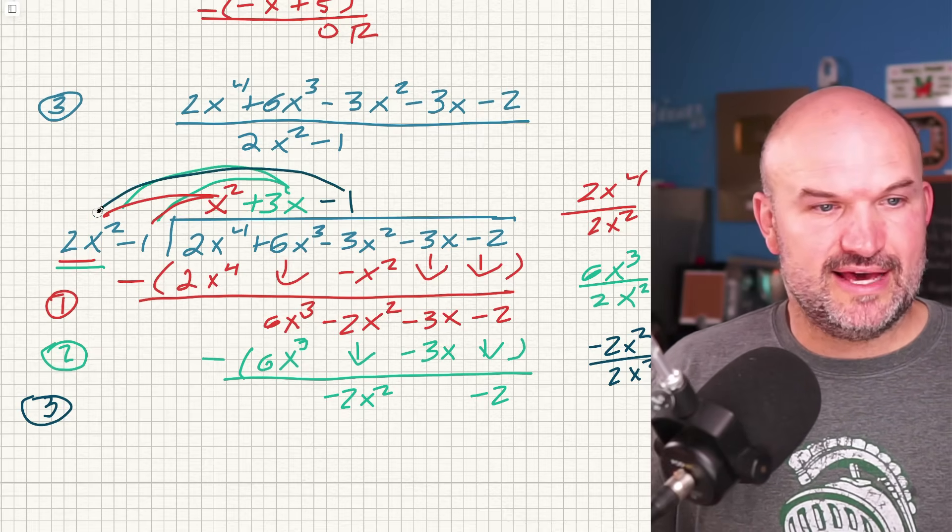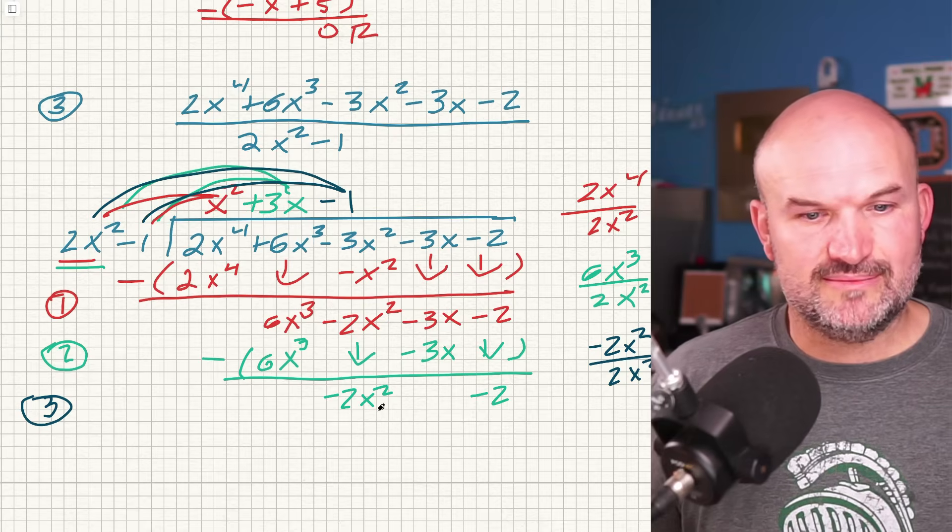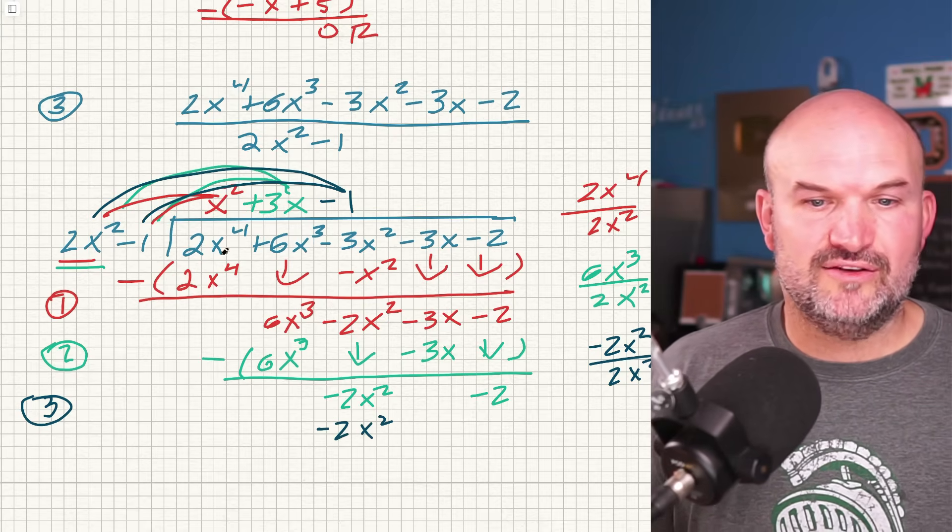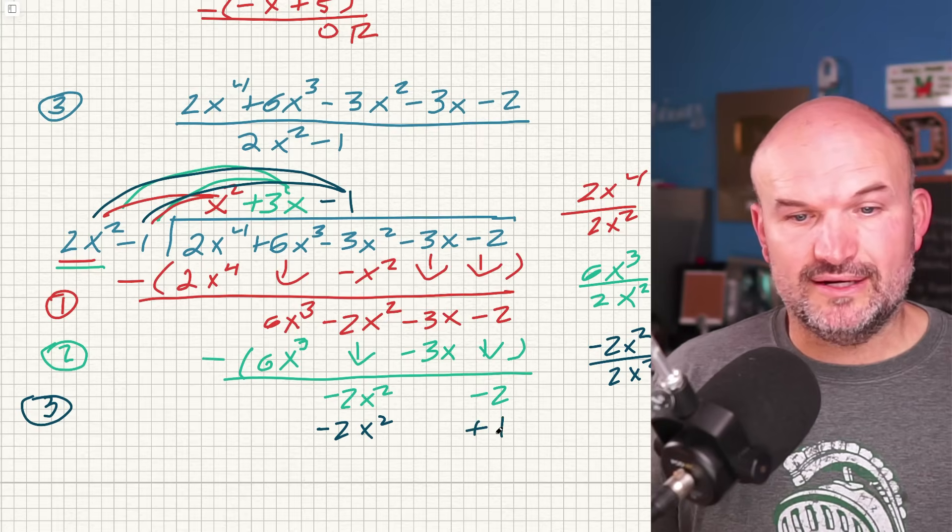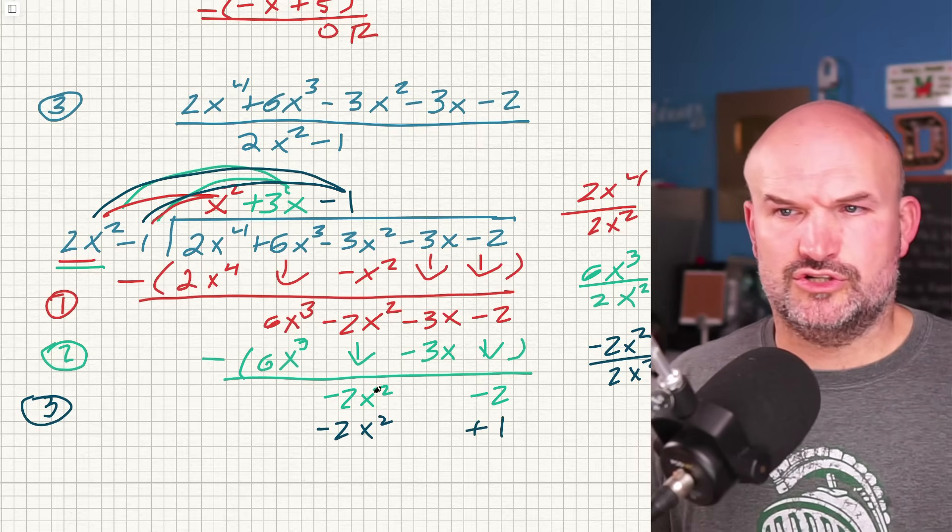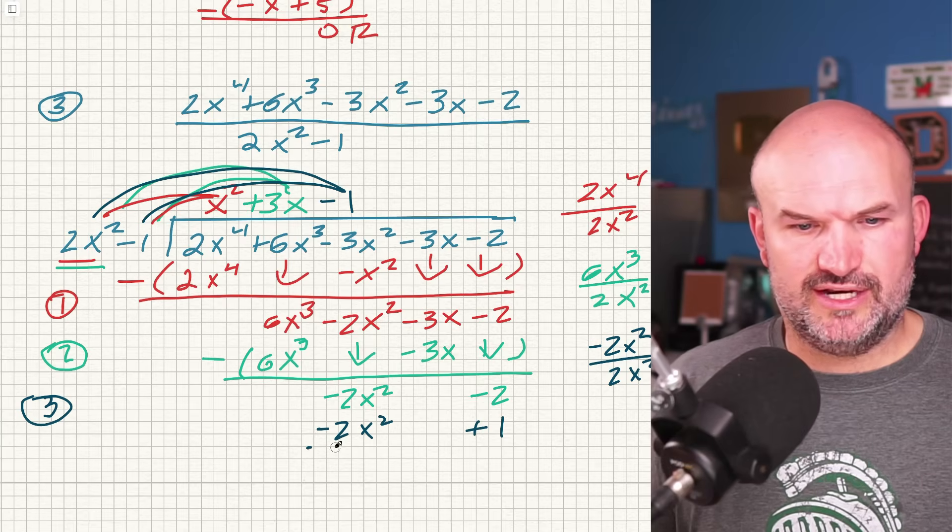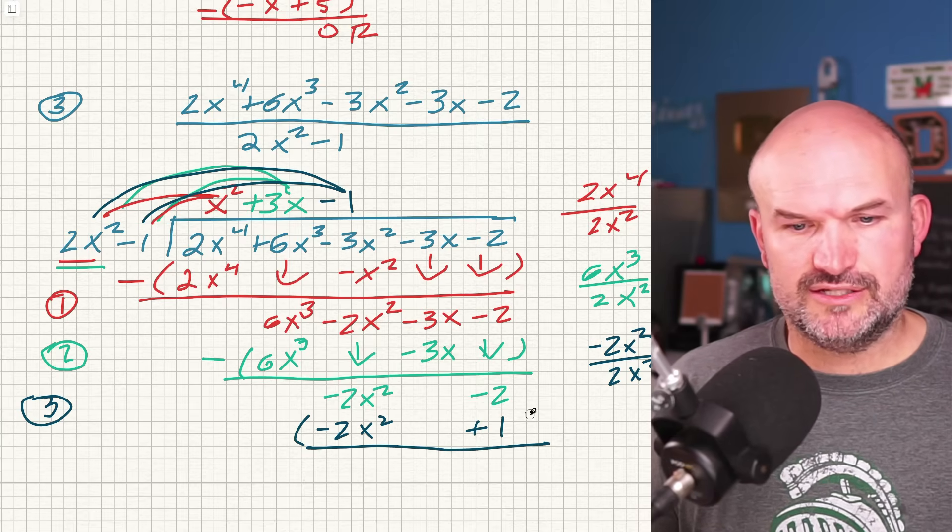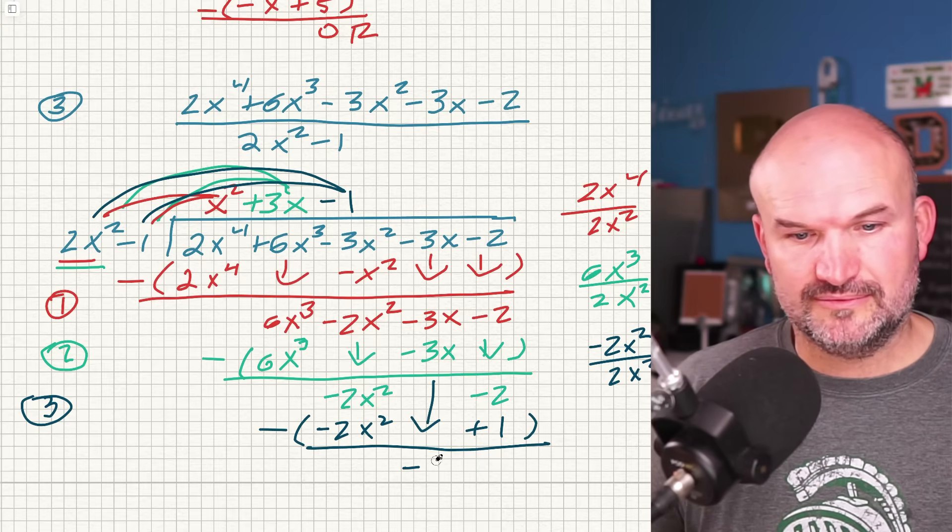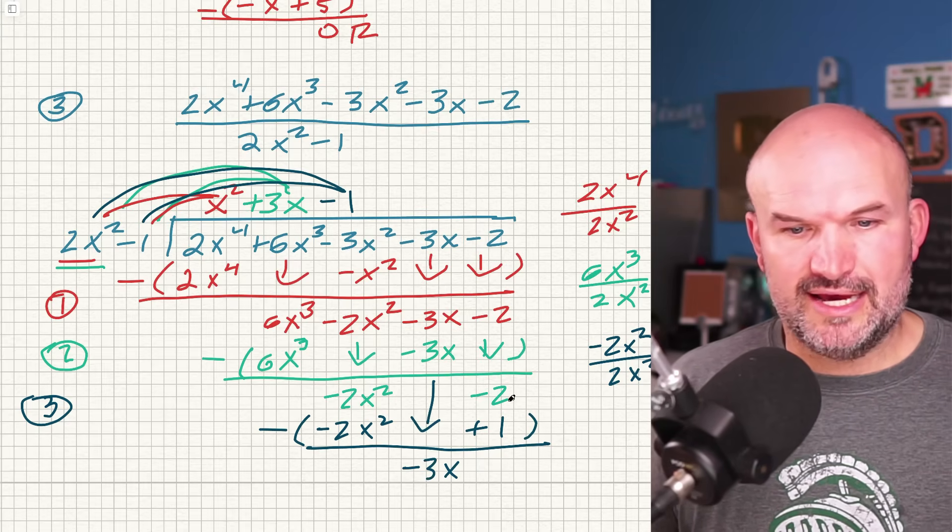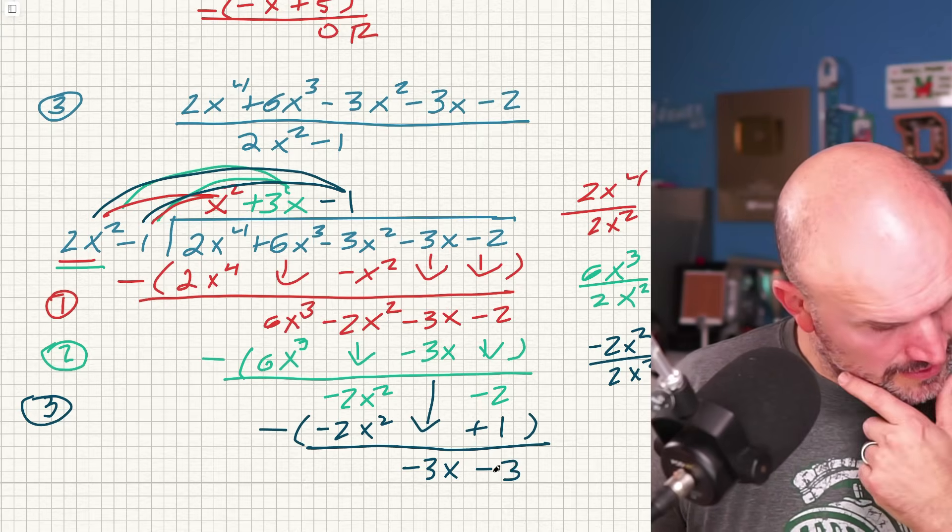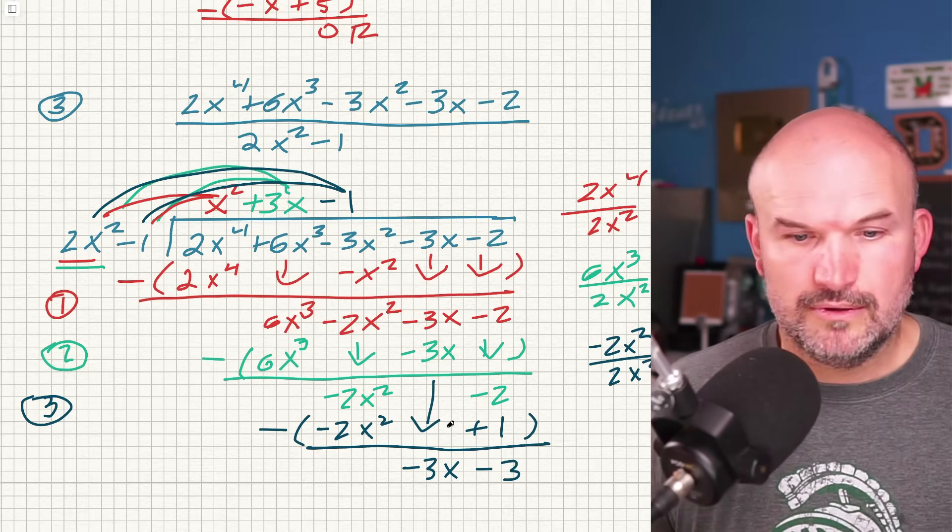So therefore that's going to be negative one. And now we've got to multiply that times both of those terms. So negative one times 2x squared is negative 2x squared. Negative one times negative one is going to be a positive one. So I'll align those together and let's go ahead and subtract our rows. So when I go ahead and subtract our rows, that's going to go to zero. I can bring down this negative 3x and negative two minus one is going to be negative three minus a negative three.